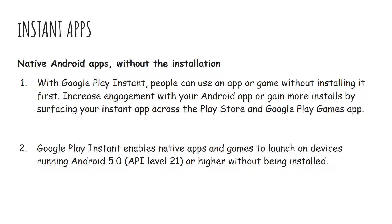The only issue is that Google Play Instant has enabled native apps and games to launch on devices running Android 5.0 or higher without being installed. So if you have already developed an application, you can convert it into an instant app, but only for Android 5.0 or higher devices. That's not really an issue though — if you have developed an application, definitely have an instant app version to help increase your downloads.